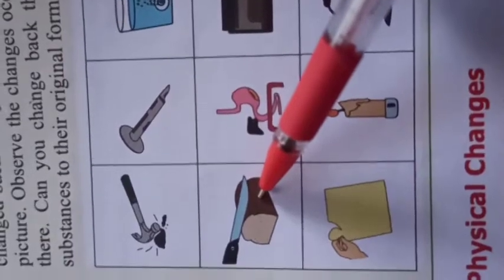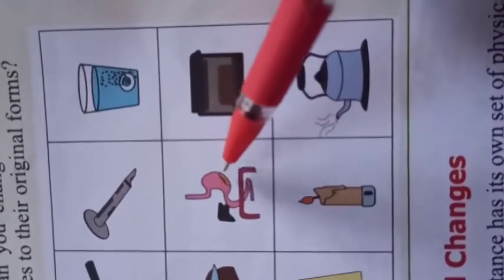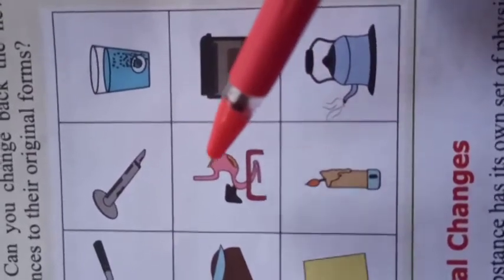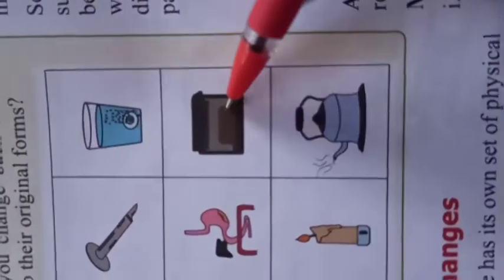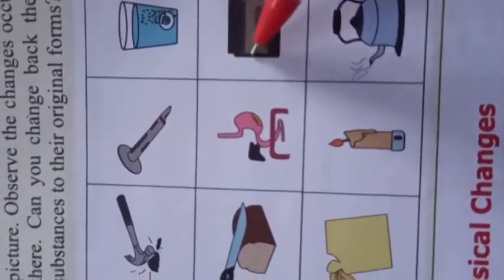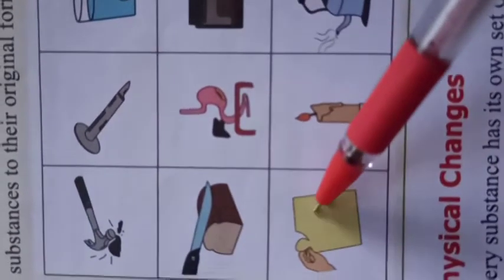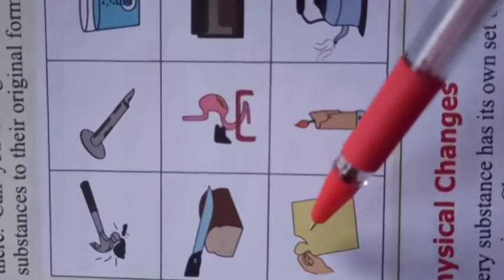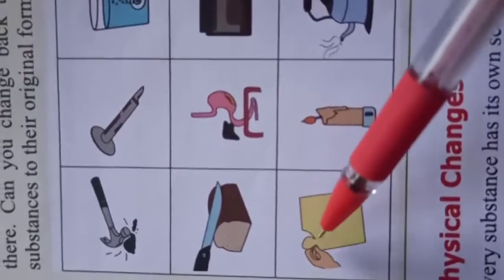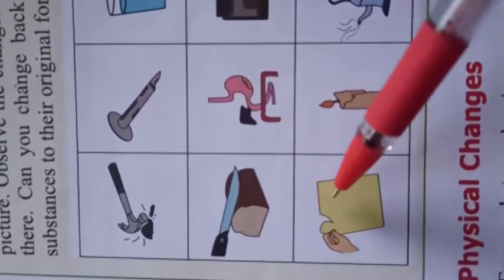Cutting bread is a physical change but an irreversible change. Digestion is a chemical change because once food is digested we can't turn that food back into its previous condition. When food is cooked that change also cannot be turned back. Tearing of paper is a physical change because no new substance is formed, but we can't join the paper pieces back to their original shape - so this is a physical change but irreversible.